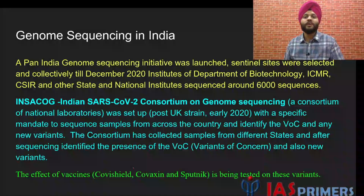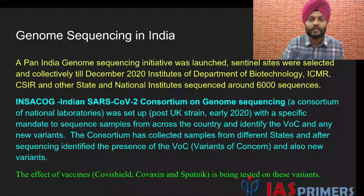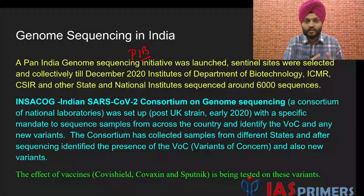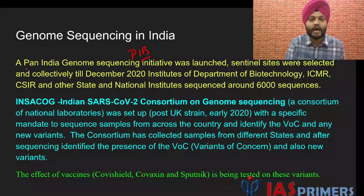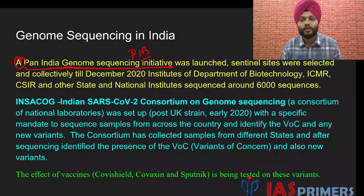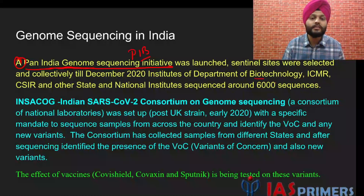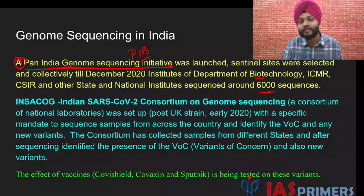Now coming to the efforts taken by India, specifically when we talk about COVID-19 — this information is gathered from the PIB, released by the government itself. First, a Pan-India Genome Sequencing Initiative was launched. According to this, various collection centers comprising institutes of the Department of Biotechnology, ICMR, CSIR, and other state and national institutes sequenced more than 6,000 sequences.